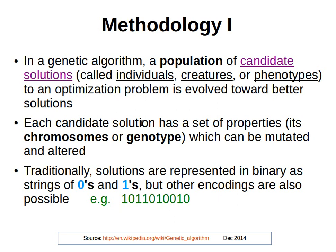Each candidate solution has a set of properties — the chromosomes or the genotype — which can be mutated and altered. We have one possible solution, and we try to change its properties in order to make it a better solution. Notice we have mutation and alteration here. Traditionally, but not necessarily always, solutions are represented in binary, maybe as a binary string — a string of zeros and ones. But other encodings are also possible.